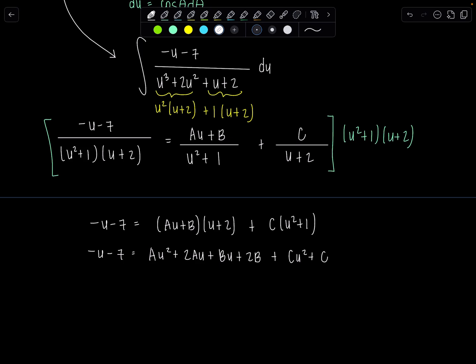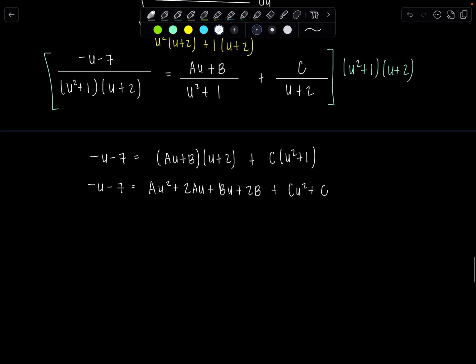So from here I'm going to equate the coefficients of like terms starting with u squared. There's no u squared on the left. So that has to equal, oh there's my alarm. I beat it again today. 0 u squared has to equal a plus c. Correct.